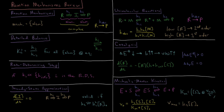The Lindemann mechanism proposes that this molecule collides with some collision partner M and results in some activated complex R*. Once this molecule becomes activated it very quickly reacts and forms the product. This gives us a rate constant using the steady state approximation equal to K1 times K2 times the concentration of the collision partner, divided by K2 plus K-1 times the concentration of the collision partner.